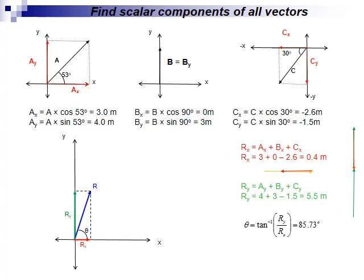Using the inverse tangent function, we can calculate the angle. And using the Pythagorean theorem, we can calculate the magnitude. And we can represent the final resultant vector as 5.5 meter at 85.73 degrees north of east.